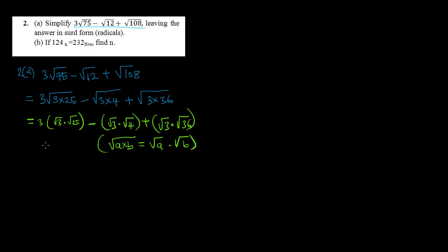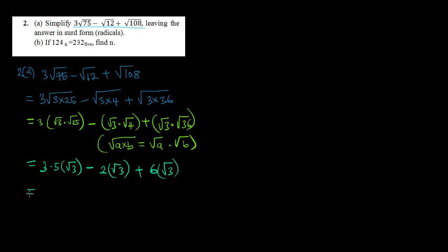This can be further simplified. From √25 we get 5, from √4 we get 2, and from √36 we get 6. So we have 3 times 5√3, minus 2√3, plus 6√3. That gives us 15√3 minus 2√3 plus 6√3.